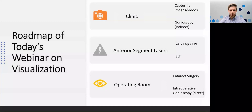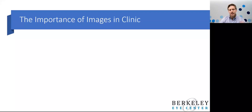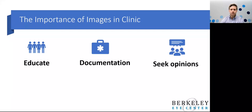Here's a roadmap of what we're going to cover today. We're going to start by talking about being in the clinic, capturing images and videos, and the reasons it's important to do that. We'll move to gonioscopy, and then talk about different anterior segment lasers, followed by optimizing your view in the operating room with various procedures. In the clinic, it's imperative that we all learn how to capture good images. There are three primary reasons: to educate, document, and seek opinions.